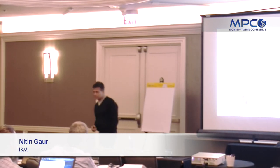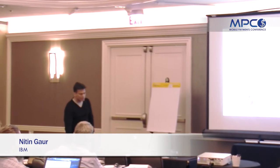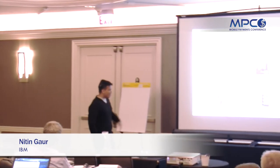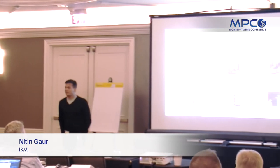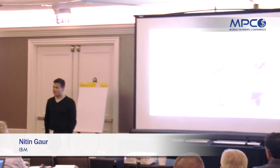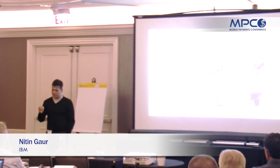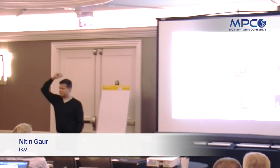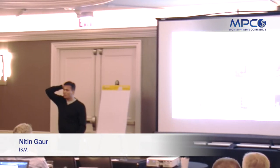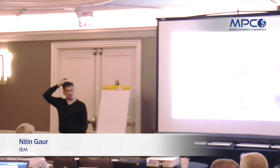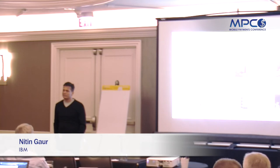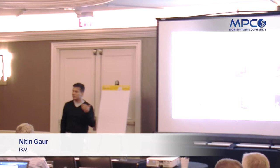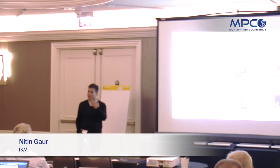Now what happens in the blockchain world — which is what Bitcoin explained and what Michael explained — is that today you have multiple entities that provide a certain trust element to us. So if I go to a bank and I want to ask for money — how many of you are in the payment world here? How many of you are in financial services? I'm asking this only because there are some examples I want to give which would make sense.